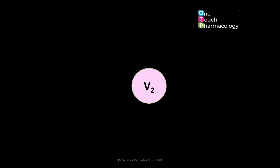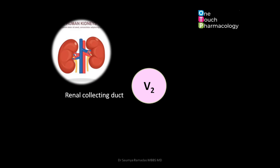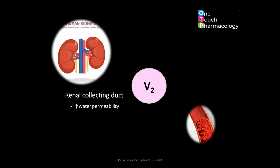The most important target of the V2 receptors is the renal system, where they act in the collecting duct to increase water permeability. V2 receptors are also present in the vascular endothelium, where they cause vasodilatation. They also have a role in the coagulation cascade, causing release of factor 8 and von Willebrand factor.